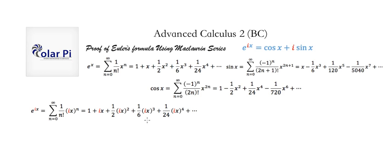And likewise, with this term, we can write it as 1 sixth i cubed times x cubed, but we know that i cubed is negative i. So we can write this as negative 1 sixth i times x cubed. And here, it's 1 over 24 times i to the fourth times x to the fourth, but i to the fourth is 1. So we can simply write 1 over 24 times x to the fourth.